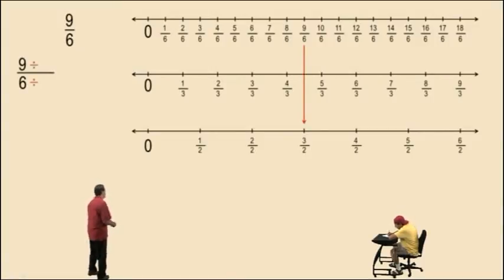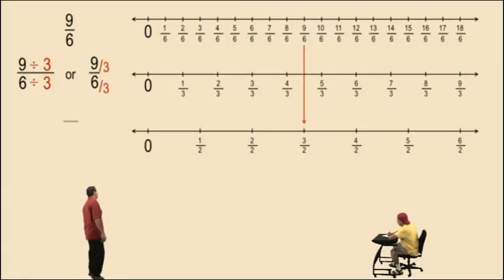9 and 6 both have a common factor of 3. So we can show that we're dividing top and bottom by 3 either using the division symbol or this little diagonal bar. 9 divided by 3 is 3 and 6 divided by 3 is 2 and we get 3 halves.